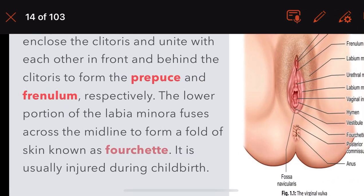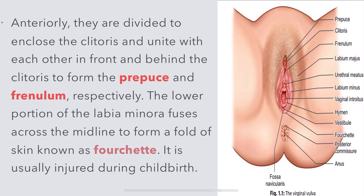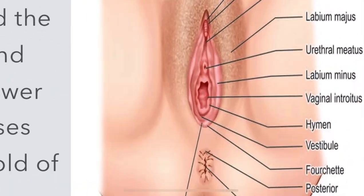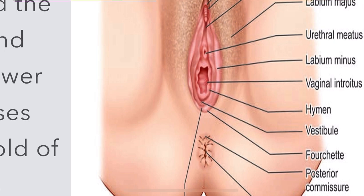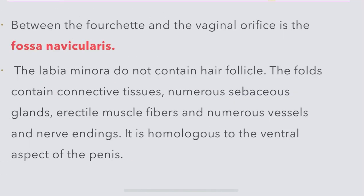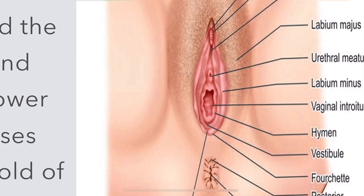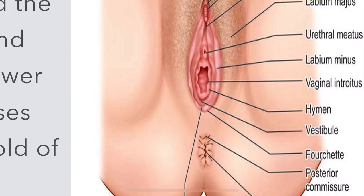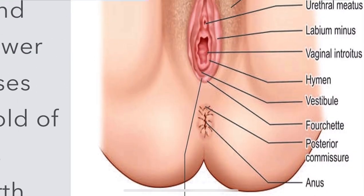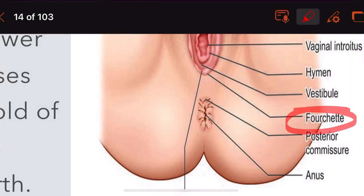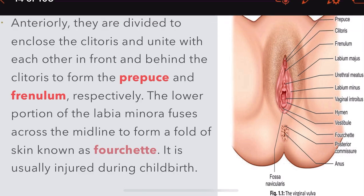The labia minora fuse in the midline forming the fourchette. Between the fourchette and the vaginal orifice lies the fossa navicularis. You can see the fourchette here and the vaginal opening here — between these two is the structure called fossa navicularis.